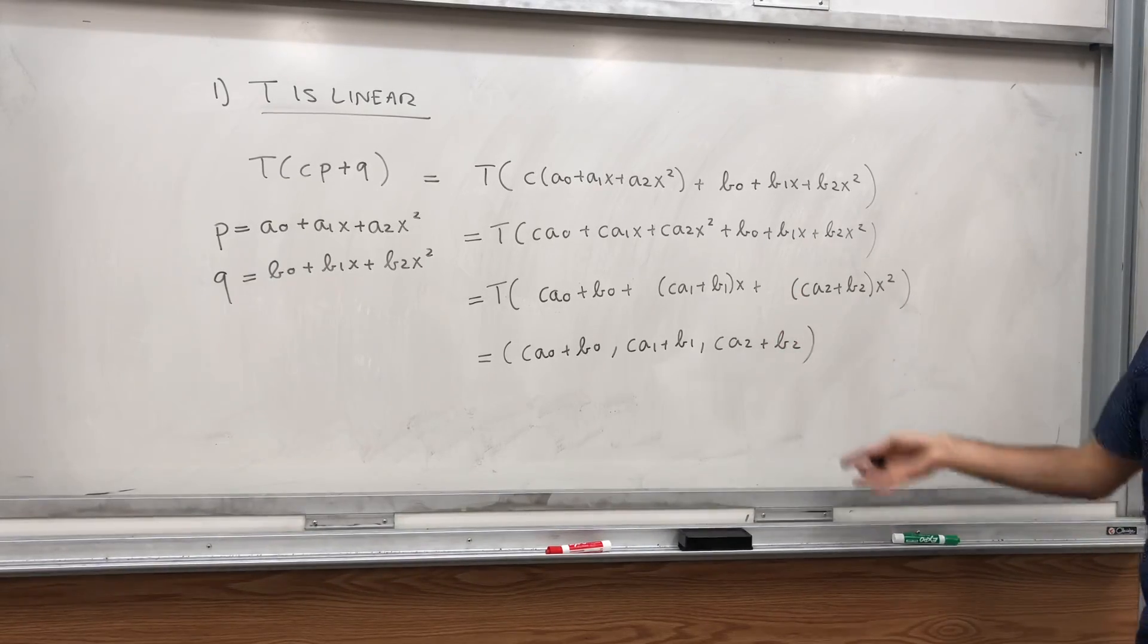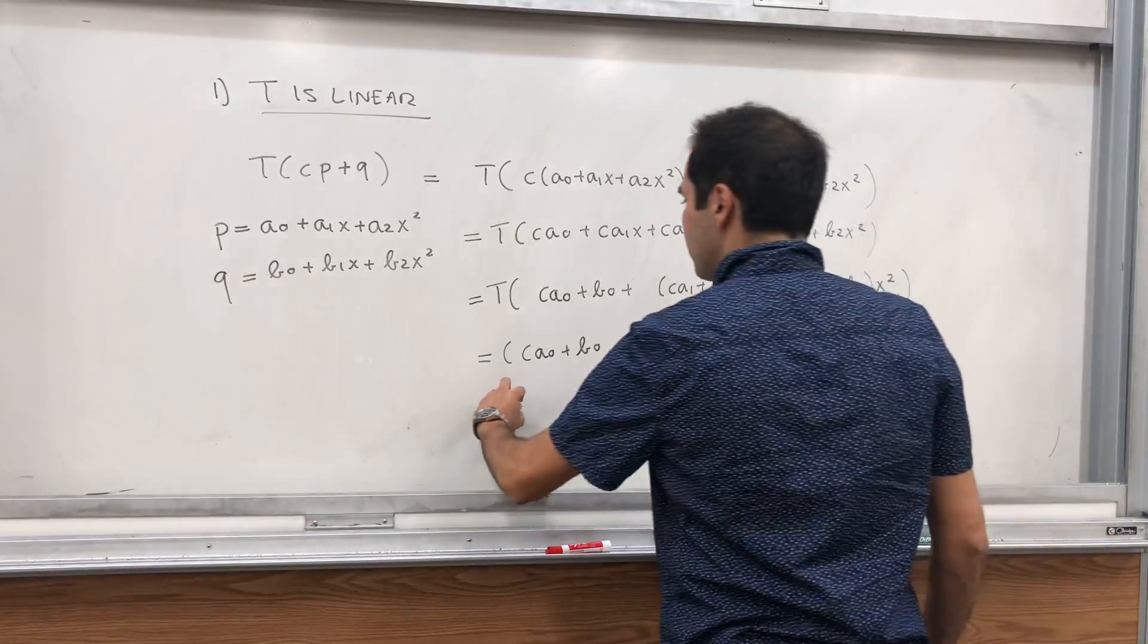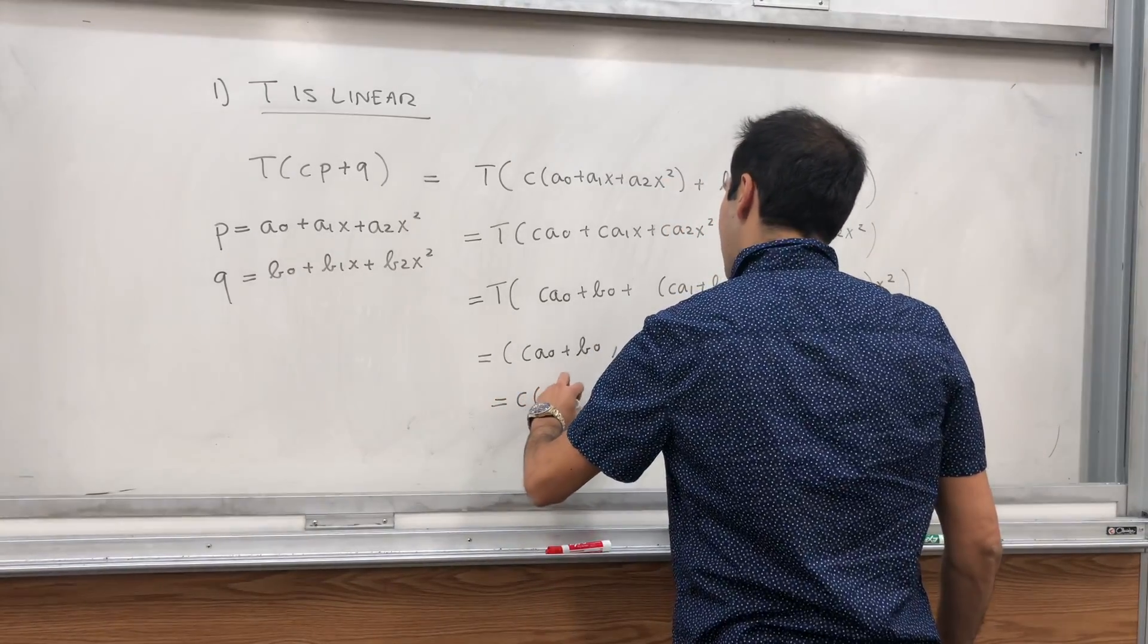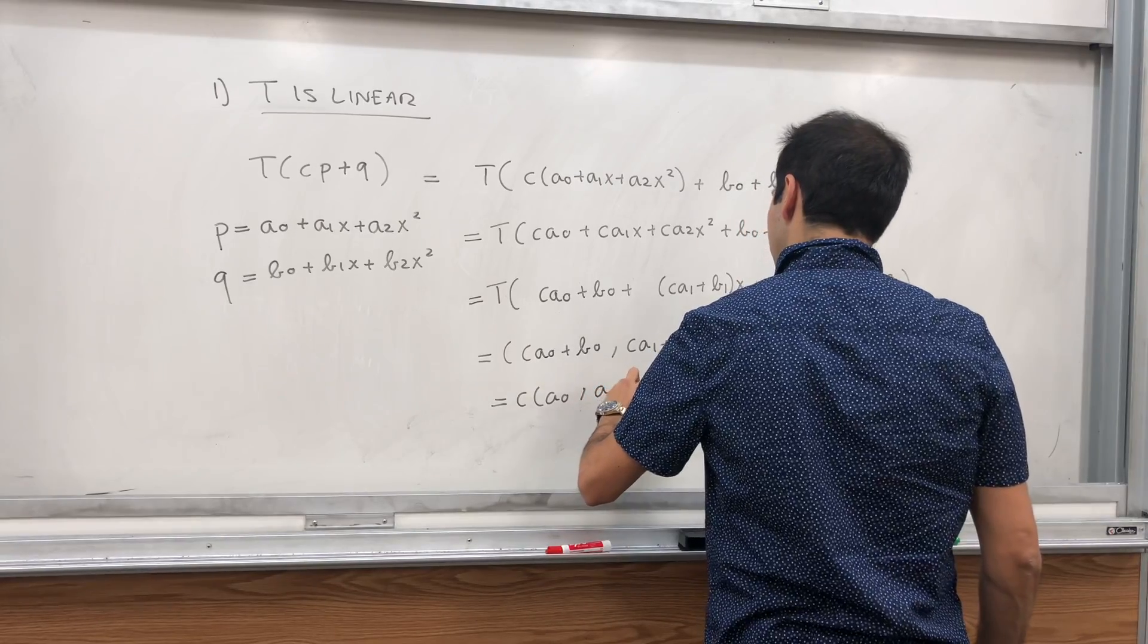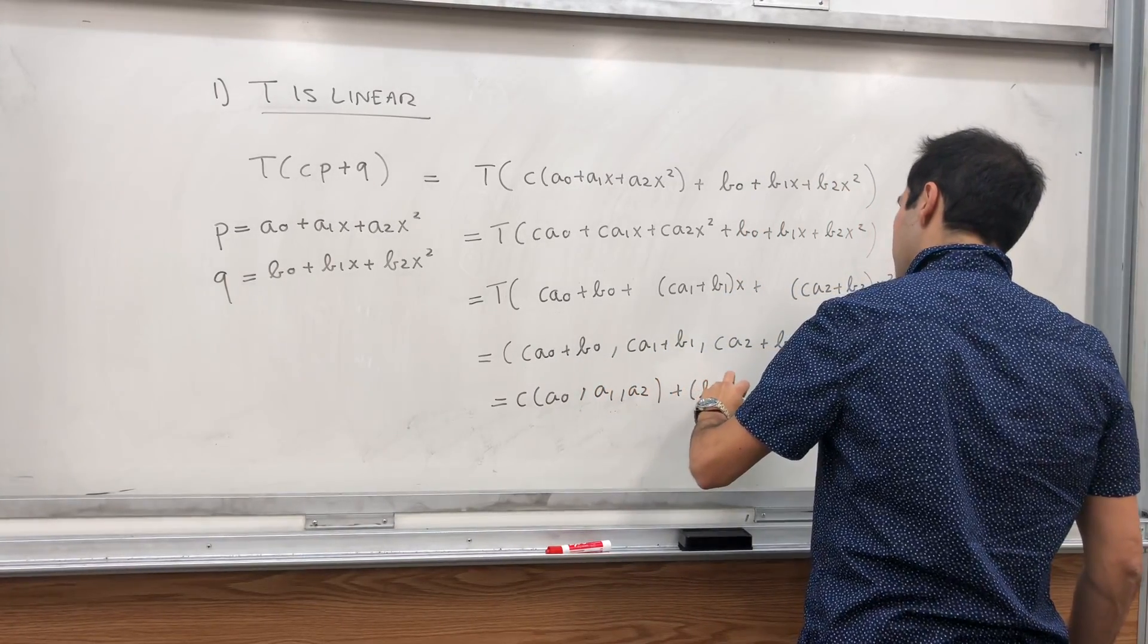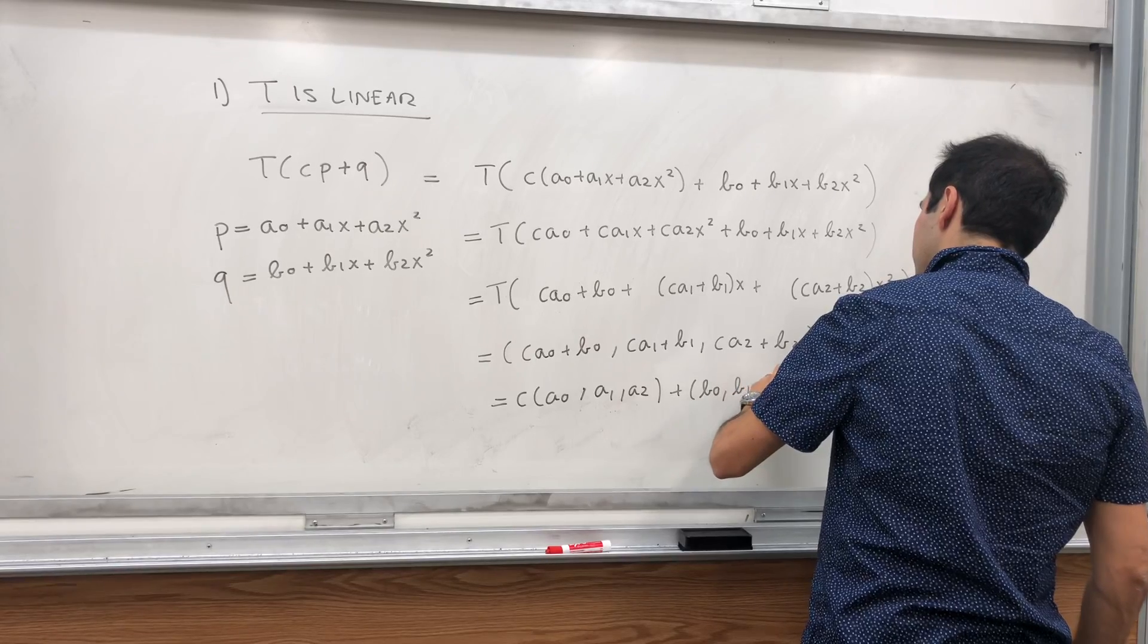And then, in terms of addition and scalar multiplication, we can rewrite this as C(a0, a1, a2) plus (b0, b1, b2).